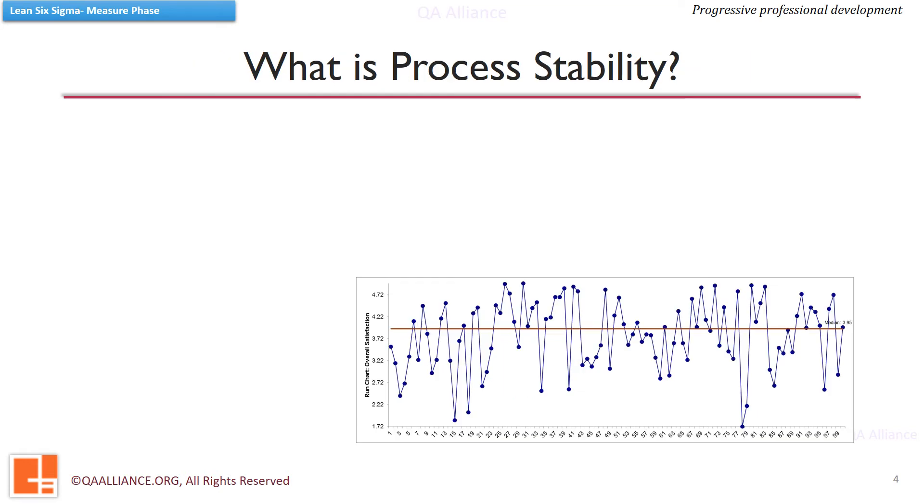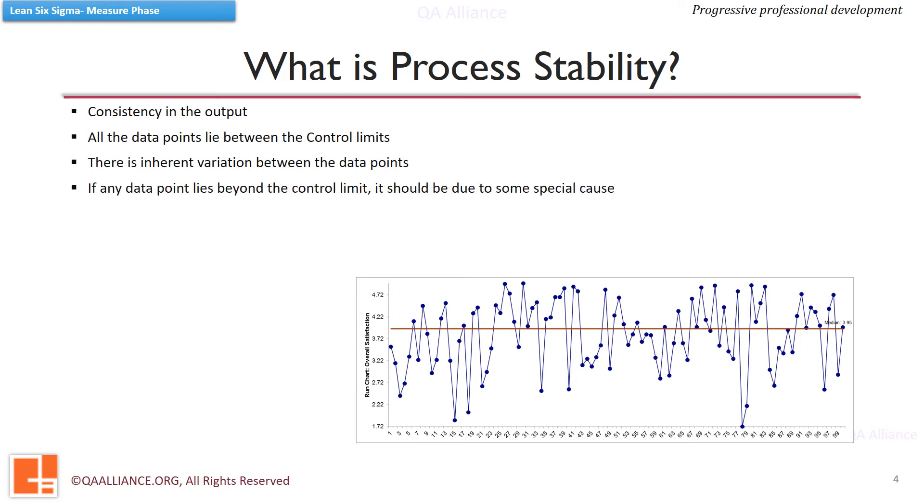Let us understand the term process stability in a bit more detail. When there is consistency in the output and all the data points lie between the control limits, we call it as a stable process. We also know that there is an inherent variation between data points caused due to common causes. In case there is any data point beyond the control limits, special causes should be identified and eliminated.